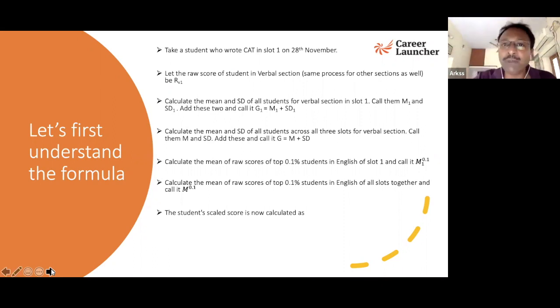And then a simple formula is used. Your raw score will be the original raw score minus G1 into M^0.1 minus G divided by M1^0.1 minus G1 plus G. This is not out of the blue, this is information given by the IIM CAT site. It's a very simple thing. So first thing you need to understand is that your raw score will not continue to be raw score. That will change as per what you have written, as per what everybody else has written in your slot, as per what everybody else has written in the full three slots, and also the 0.1% of them in your slot as well as 0.1% of them put together of the entire country.